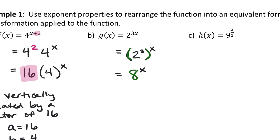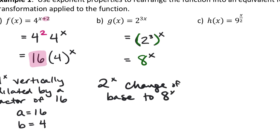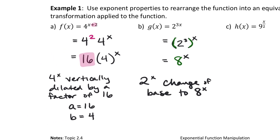What we have done here is a change of base from 2 to the x to 8 to the x. That's what a horizontal dilation does to an exponential function — it essentially changes the base of the function. The main idea: if you have a horizontal translation, it is actually a vertical dilation. If you have a horizontal dilation, it is actually a change of base. We can manipulate these functions back and forth into different forms.